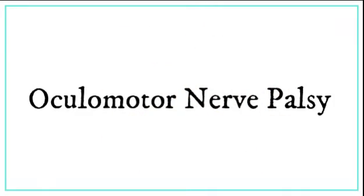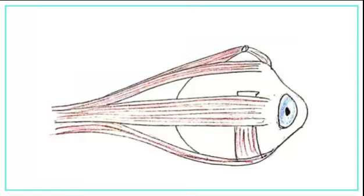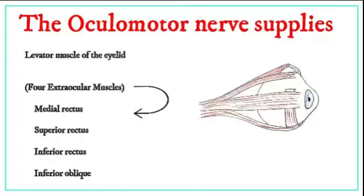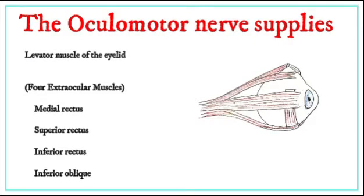Oculomotor nerve palsy. The oculomotor nerve supplies the levator muscle of the eyelid and four extraocular muscles: medial rectus, superior rectus, inferior rectus, and inferior oblique.